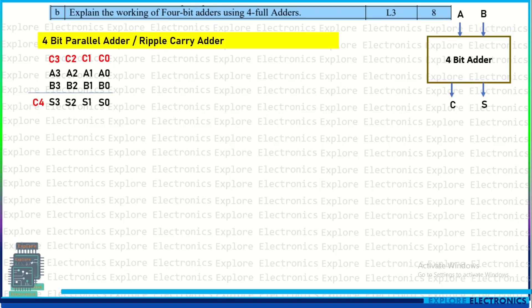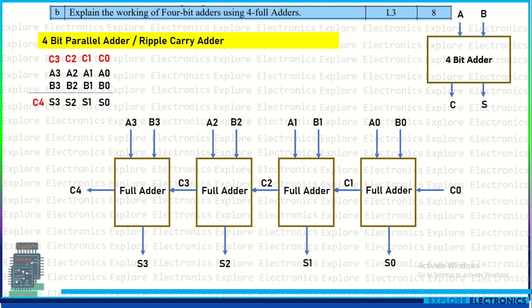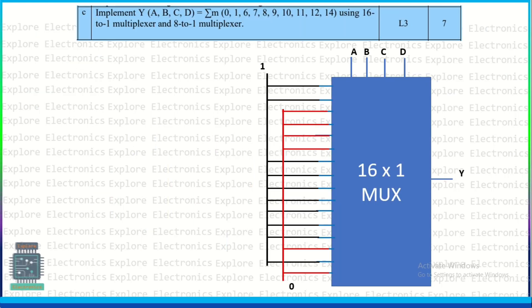For the 4-bit adder using four full adders: a 1-bit full adder is designed first, and then used to build the 4-bit ripple carry adder. The diagram shows inputs A0, B0, A1, B1, A2, B2, A3, B3 and outputs S0, S1, S2, S3, and carry-out C4.